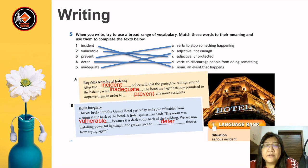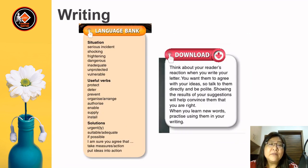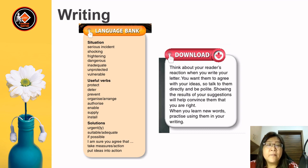Let's look at the language bank. For describing the situation, you can use: serious incident, shocking, frightening, dangerous, inadequate, unprotected, and vulnerable. Useful verbs include: protect, deter, prevent, organise, arrange, authorise, enable, supply, and install. For solutions, use: urgent/urgently, suitable/adequate, if possible, I'm sure you agree that, take measures/take action, and put ideas into action. Remember: think about your reader's reaction when you write. You want them to agree with your ideas, so talk to them directly and be polite. Showing the results of your suggestions will help convince them that you're right. When you learn new words, practise using them in your writing.